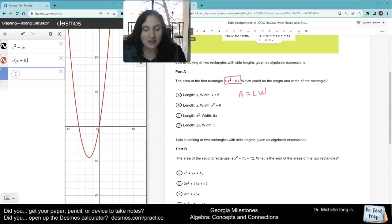But let's try the other ones. I've got x times x squared plus 6. Nope, that's definitely not the right graph. If I turn off the red one, those two don't match. If I have x squared times 6x, that's also not the same graph.